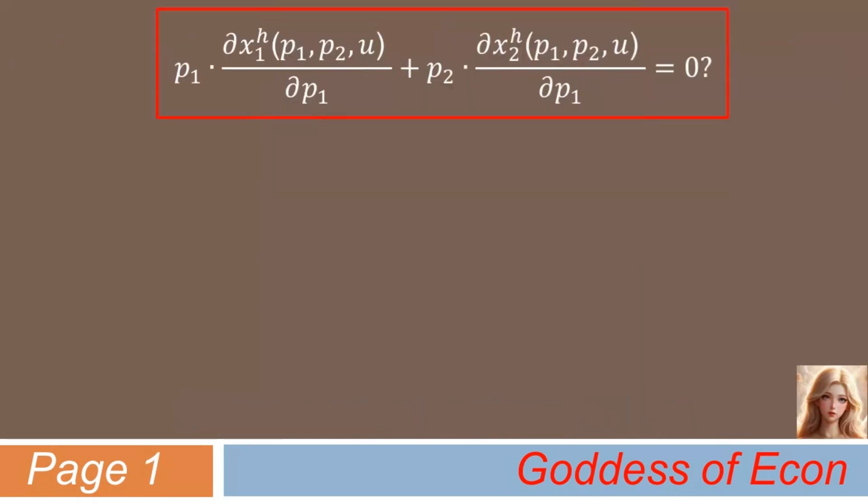Okay, in part 1 of my lecture video, I mentioned that proving Shepard's Lemma would be equivalent to showing that the two terms on the top of the slide add up to 0. In order to do that, we need to use the first order conditions of the typical cost minimization problem in consumer theory as follows.